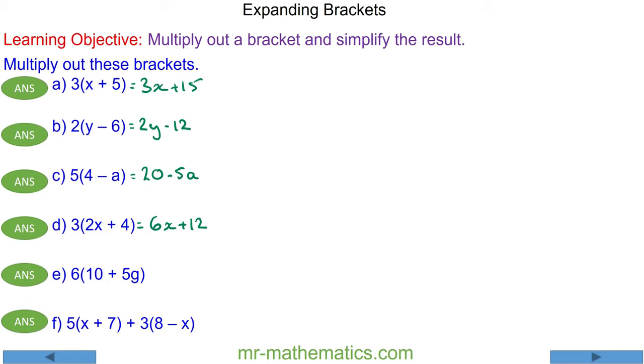For question E we have 6 lots of 10 plus 5g. So we have 6 multiplied by 10 and then 6 multiplied by the 5g. 6 times 10 is 60, and 6 times 5 is 30, but it's 5g, so it is 60 plus 30g.